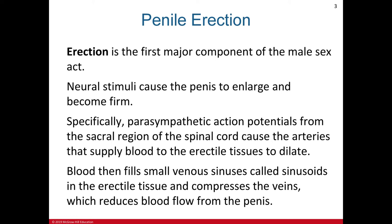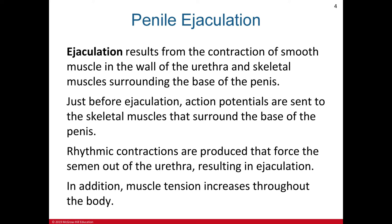When the blood vessels fill small venous sinuses called sinusoids in the erectile tissue, they compress the veins, which reduces blood flow from the penis. The second process of the male sex act, just before resolution, is ejaculation, which results from contraction of smooth muscle in the walls of the urethra and skeletal muscle surrounding the base of the penis.